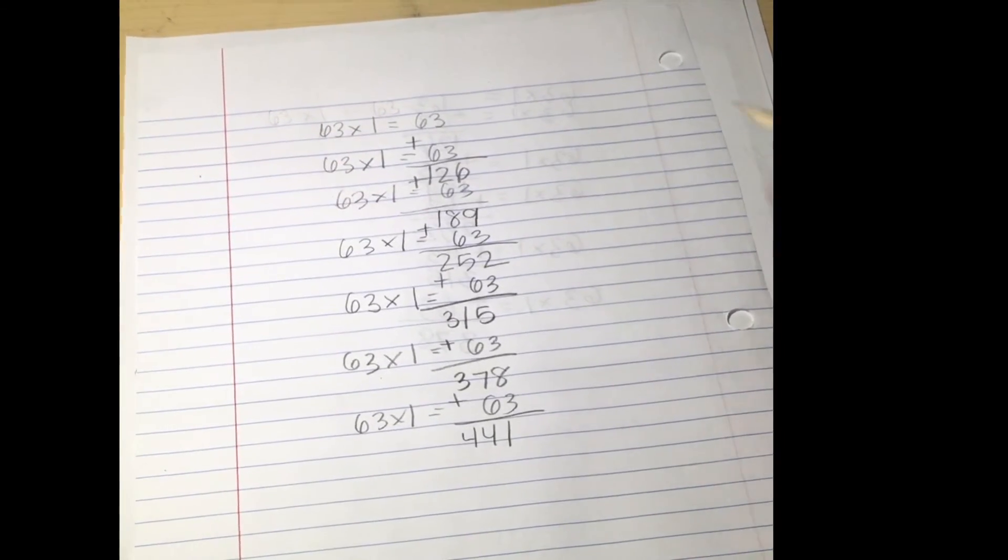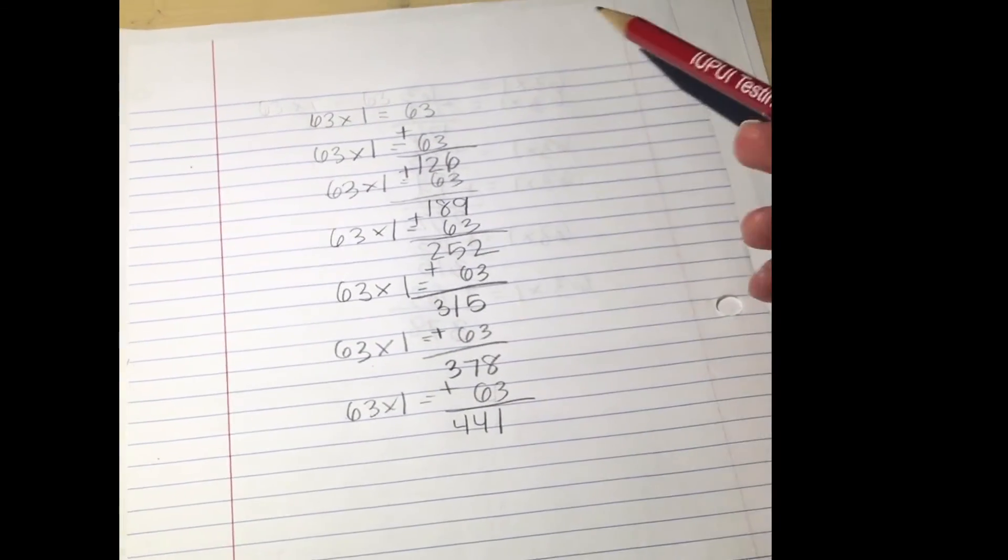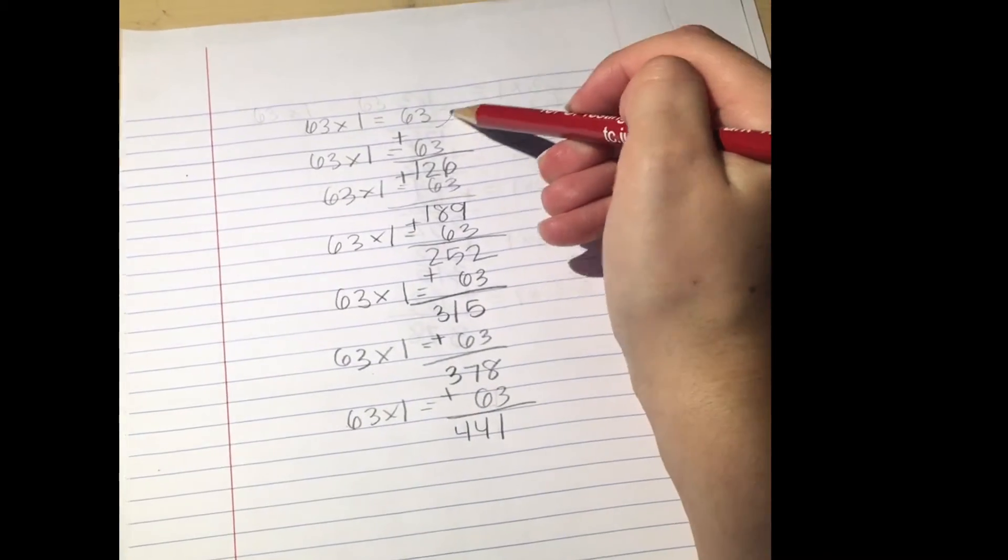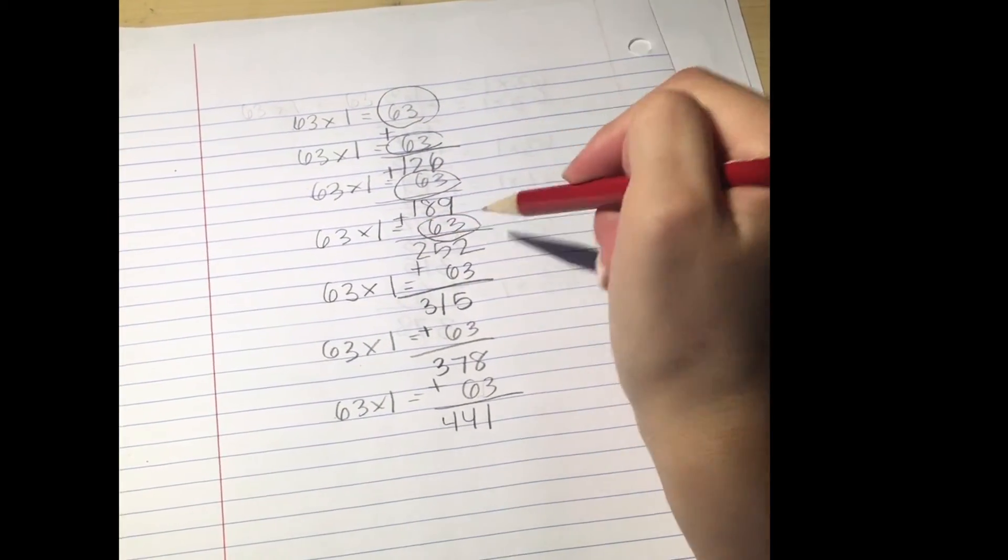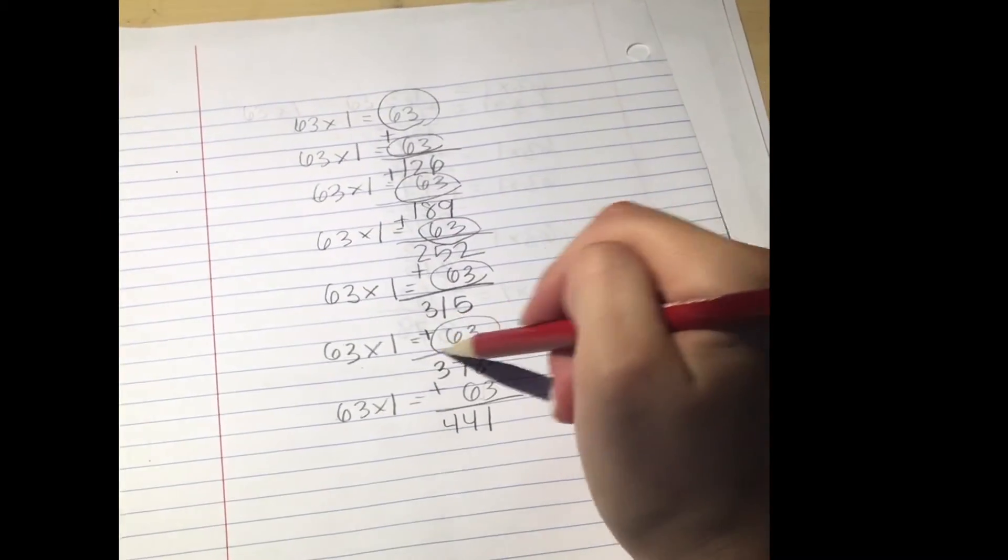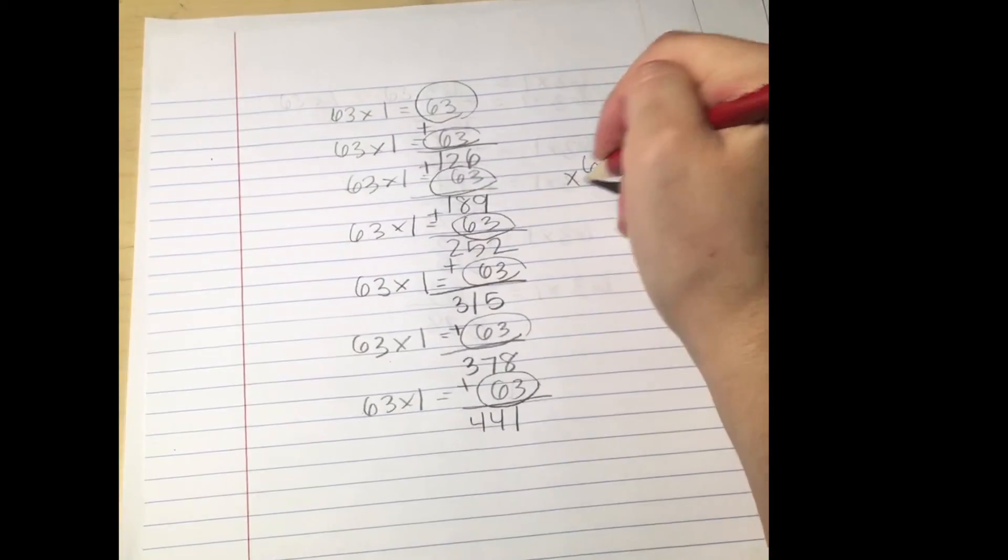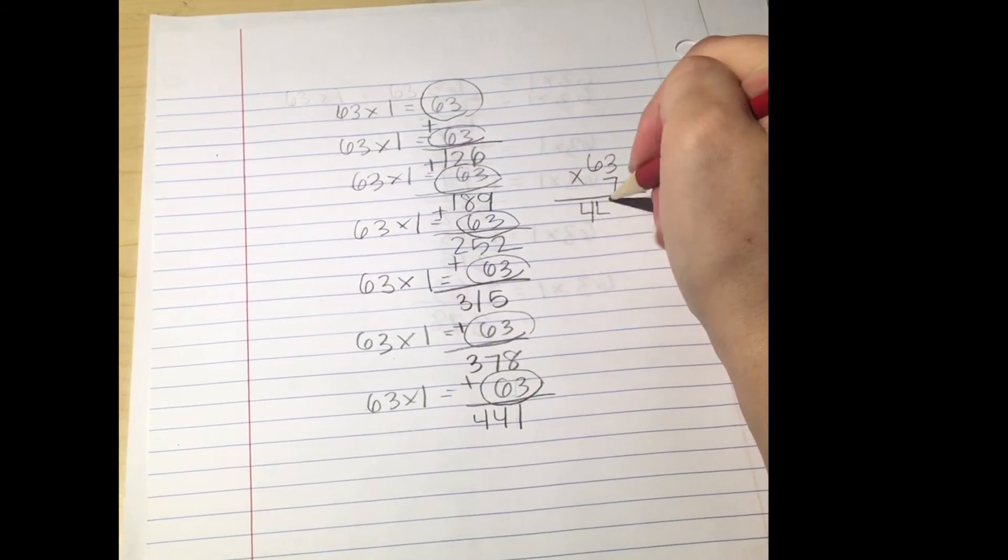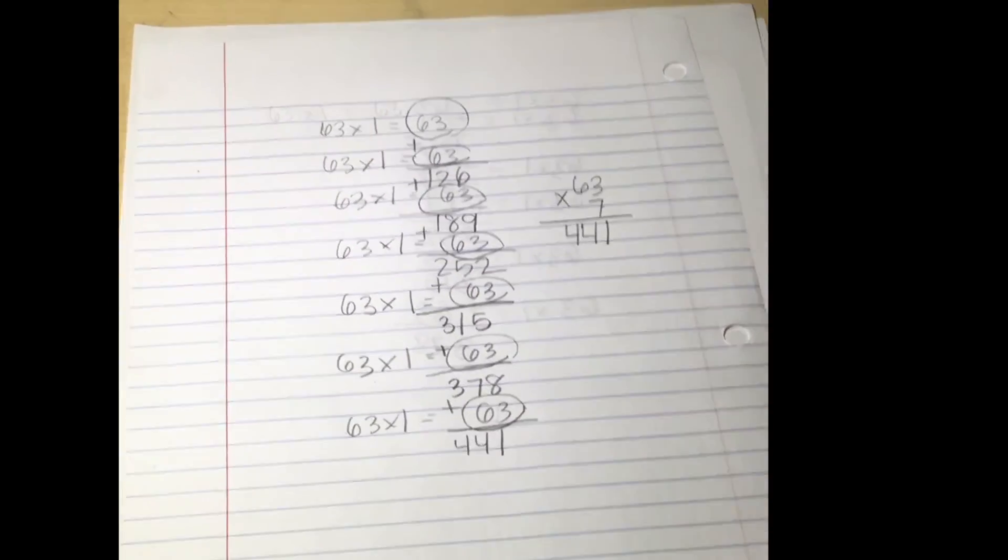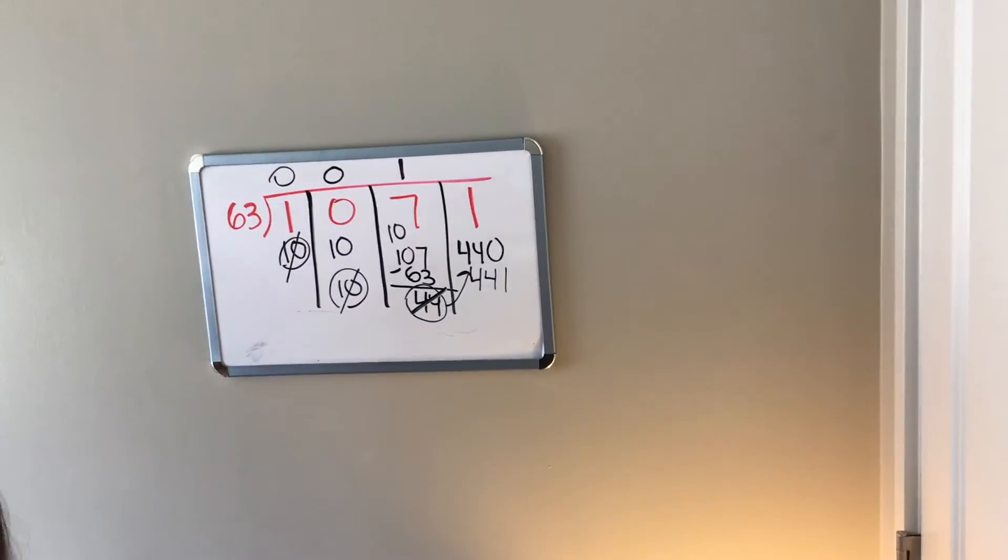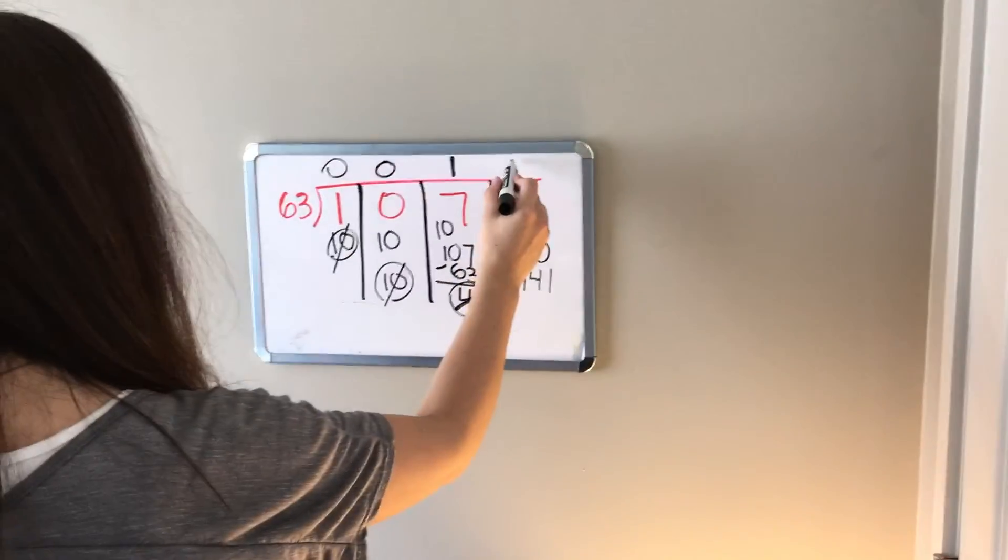But now how many times did we multiply 63 by to get our final answer? Well to do that we can just count how many 63s we have written. So there's one, two, three, four, five, six, seven. So now we know that 63 times 7 is 441, so we can write 7 in our other problem. So now that we just found out that that number is 7, we know that we can plug in 7 right here.